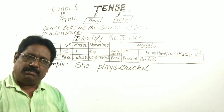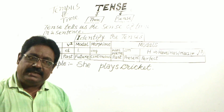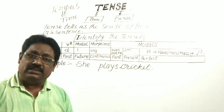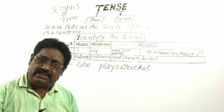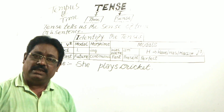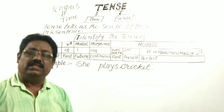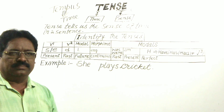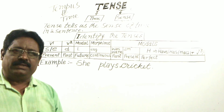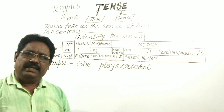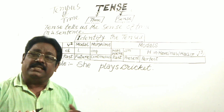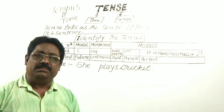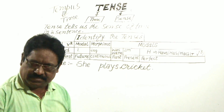Number four: Time denotes days, months, years, etc., but Tense does not. In grammar, Tense is a category that expresses time reference.